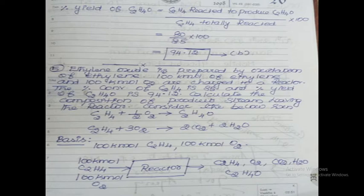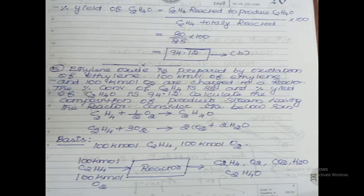First step: write the basis — 100 kilomoles of ethylene and 100 kilomoles of oxygen. Draw a block diagram with a reactor as the equipment. Reactants ethylene and oxygen, each 100 kilomoles, enter the reactor. Products leaving the reactor are: ethylene oxide (main product), carbon dioxide and water (side products), and unreacted ethylene and oxygen — five components total.